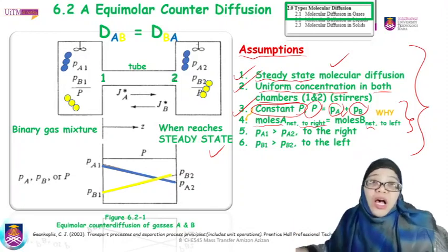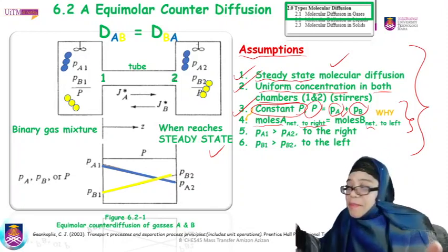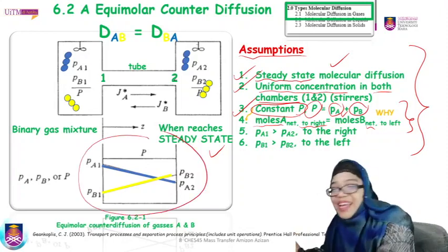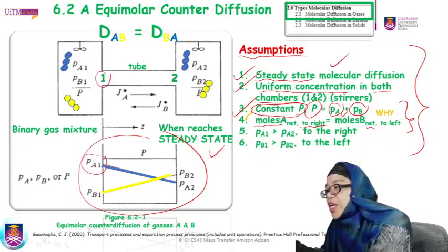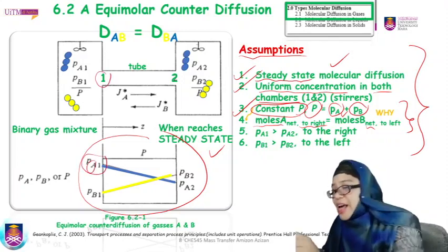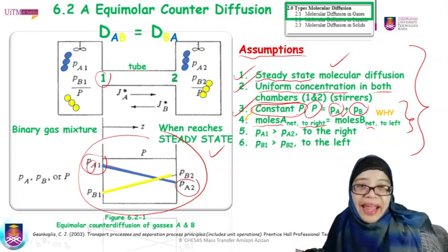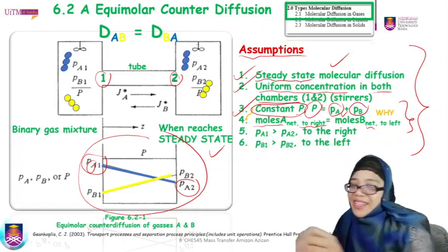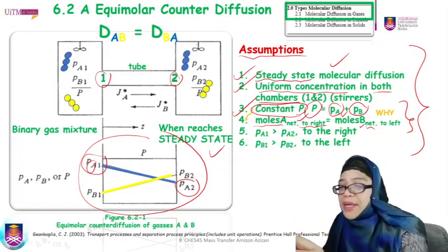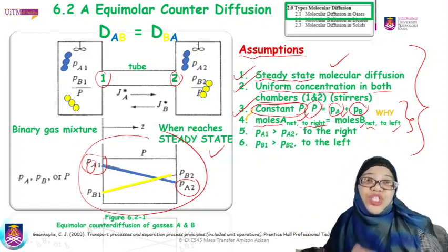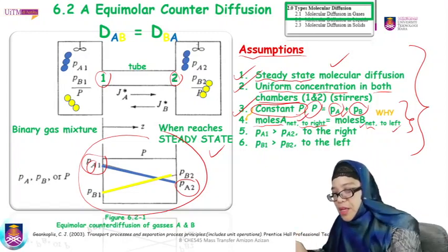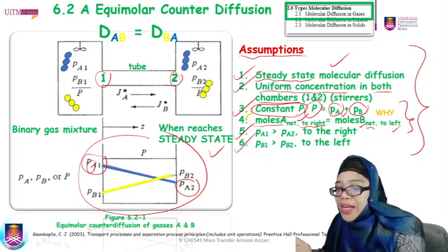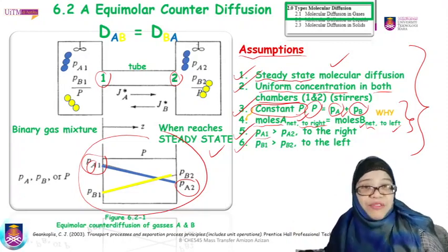Because of the constant total pressure assumption, the net moles of A going to the right is equivalent to the net moles of B going to the left. We know the direction by looking at the partial pressure plot: the partial pressure of A at location 1 is higher than at location 2, so A goes to the right, and B goes to the left — showing counter diffusion.